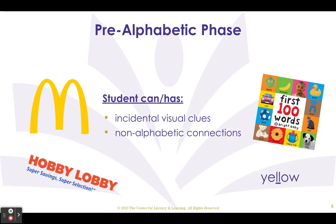A child in the pre-alphabetic phase recalls logos and visual clues such as the golden arches, known as McDonald's. The child makes non-alphabetic connections, and while the child may recall the letters in his or her name, these letters are memorized forms and are not connected to the sounds in the name. Children in this phase may pretend to read books as they recite what they have memorized.